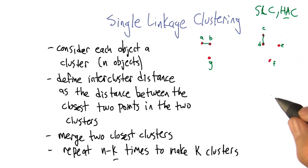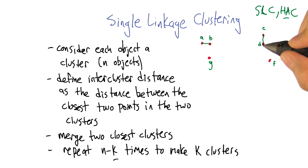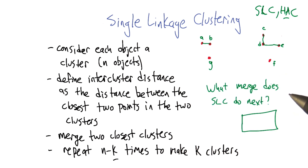We want to know what's the currently closest pair of clusters. From where I'm looking, it's either E to the C-D cluster, or G to the A-B cluster — and they look very similar to me. I tried really hard to make it so there'd be an easy answer, but they're really close. I think it doesn't matter too much. So now let's do a quick quiz: what merge does single linkage clustering do next? Just give the pair of points you'd be connecting, separated by a comma.